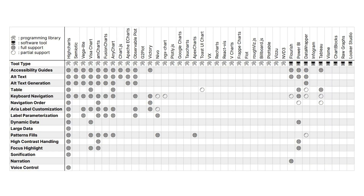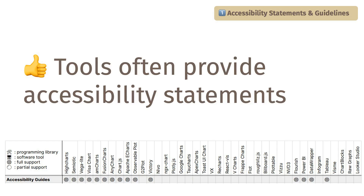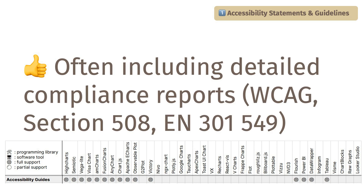Here is a table that shows an overview of the analysis. The tools are listed on the horizontal axis, and the dimensions of the analysis, such as alternative text and keyboard navigation, are listed on the vertical axis. Overall, we categorized our findings into five main themes, including accessibility statements, standard accessibility methods, and keyboard navigation. It is encouraging that several tools often provide accessibility statements, including detailed compliance reports on how well they satisfy accessibility standards.